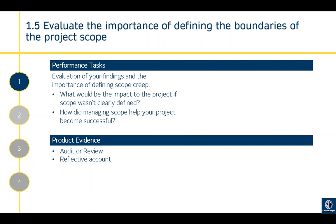If you have missed out on it, it can be covered in an isolated piece of evidence — reflecting on a project you've worked on. But it should be very specific to your particular project: what worked well, what didn't, why it's important that scope was defined, and what would happen if it wasn't. Reflect on the impact to the project if scope wasn't clearly defined and how managing scope helped your project become successful. Product evidence could be some sort of audit, review, or reflective account.